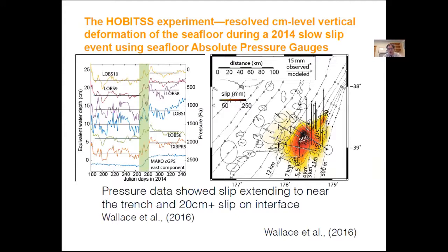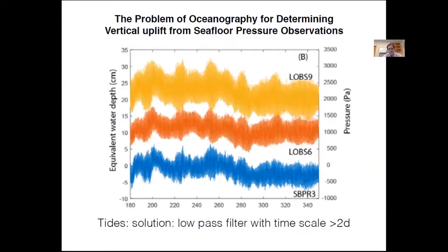The signal-to-noise for these observations is quite low. The problem is oceanography. The raw pressure records show tides — in this case about 20 centimeters peak-to-peak. If you low-pass filter with a time scale of two days or longer, you remove most of the tides. What you're left with is a fairly large signal, about 10 centimeters or more, especially from mesoscale eddies, which are coherent across most of the array. If you were looking for the slow slip event in there, it's fairly hard to pick out.